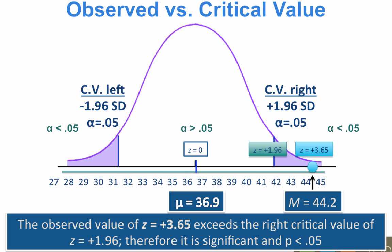If not, the results would not be significant. In this case, z equals 3.65 exceeds the critical value 1.96, so the results are statistically significant. We will reject the null hypothesis.